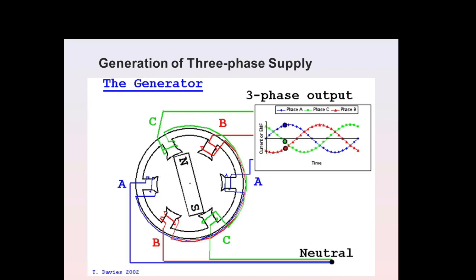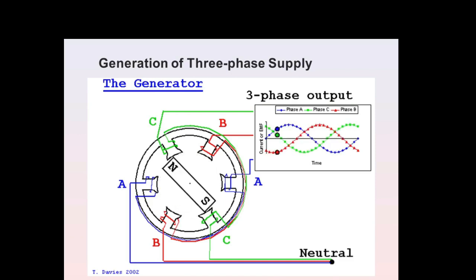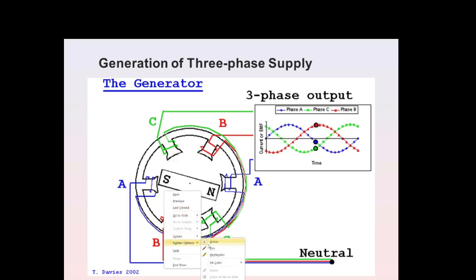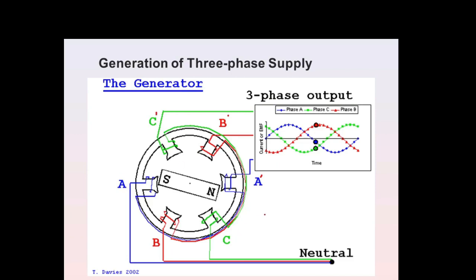Now we look at the generation of a three-phase supply. Consider a stator having a stationary part and a rotor having field coils. For a three-phase system, let us assume coils A–A', B–B', and C–C' as the three phases instead of R, Y, B. The rotor has two poles — a south and a north pole.